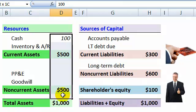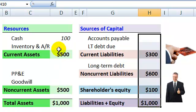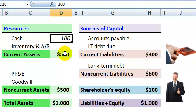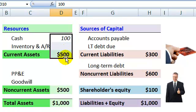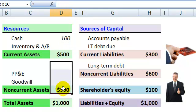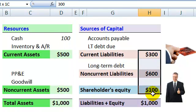The sort order in both cases is pretty much by liquidity — cash at the top, as it's the most liquid, then items that are current, meaning assets that will generally be converted into cash within a year, and then non-current assets. Similarly, on the liability side, current liabilities down to non-current liabilities.